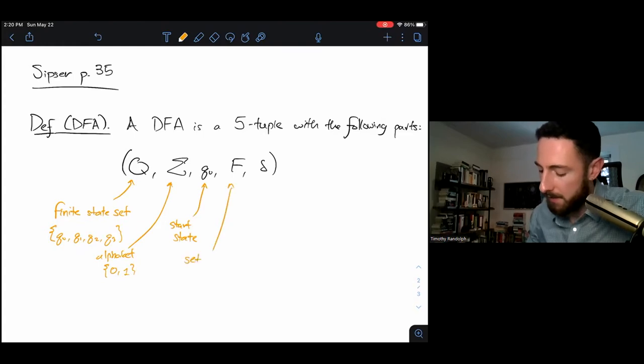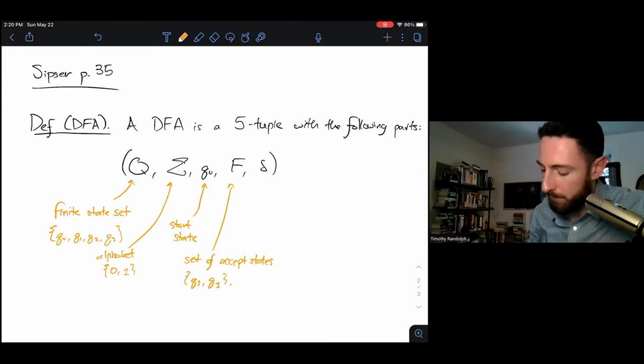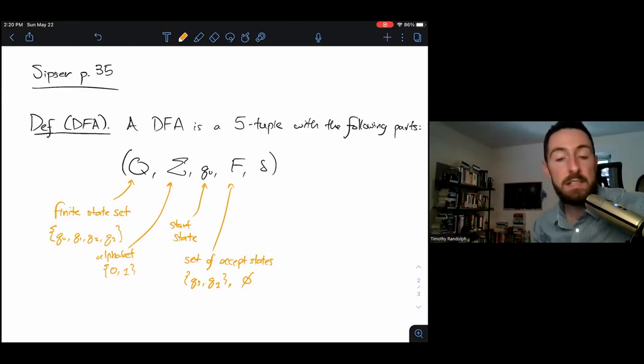F is a set of accept states. Maybe we've got a couple of accept states like Q3 and Q1. We could have just one accept state. We could even have no accept states - that's perfectly legal. But of course, if we have no accept states, then our DFA will reject all strings. It'll recognize the empty language.